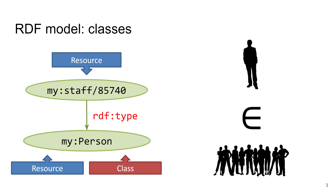Next we talked about classes, which are resources like all resources in the RDF data model. The first thing we want to say about any resource is its type. For instance, here we have a resource representing an employee, and we want to say that this employee is a person. We do that using the rdf:type predicate. RDF type stands for an IRI — this is its prefixed version — and we say that this employee is a person, identified by an IRI representing the class Person, which can be viewed as a set of all people belonging to this class.